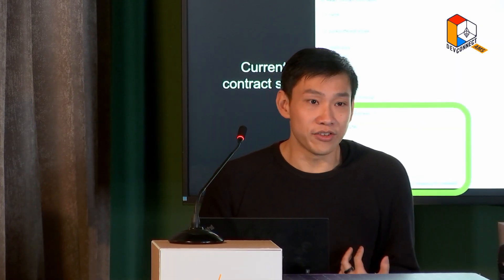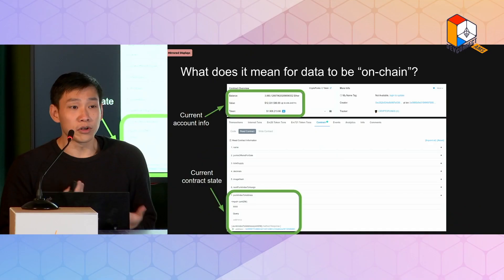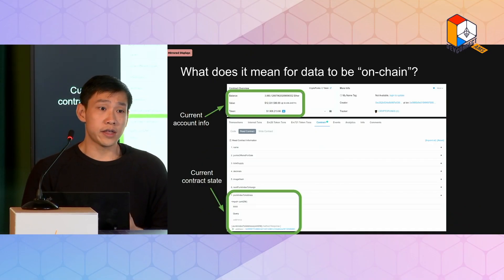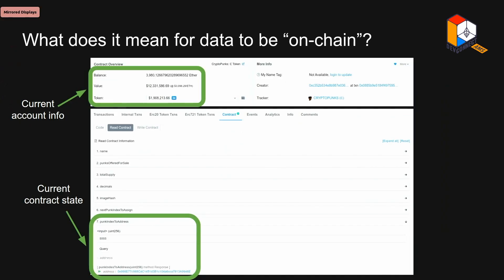I'm excited to introduce ZK Attester to you guys. It's a project to prove all Ethereum on-chain data to Ethereum. You might think that on-chain data is already available to Ethereum, but if you look more closely at the structure of on-chain data on Etherscan, you'll see that some types of data like the account balance, the nonce, and the current contract states, highlighted here, is available for smart contracts to use in other applications.